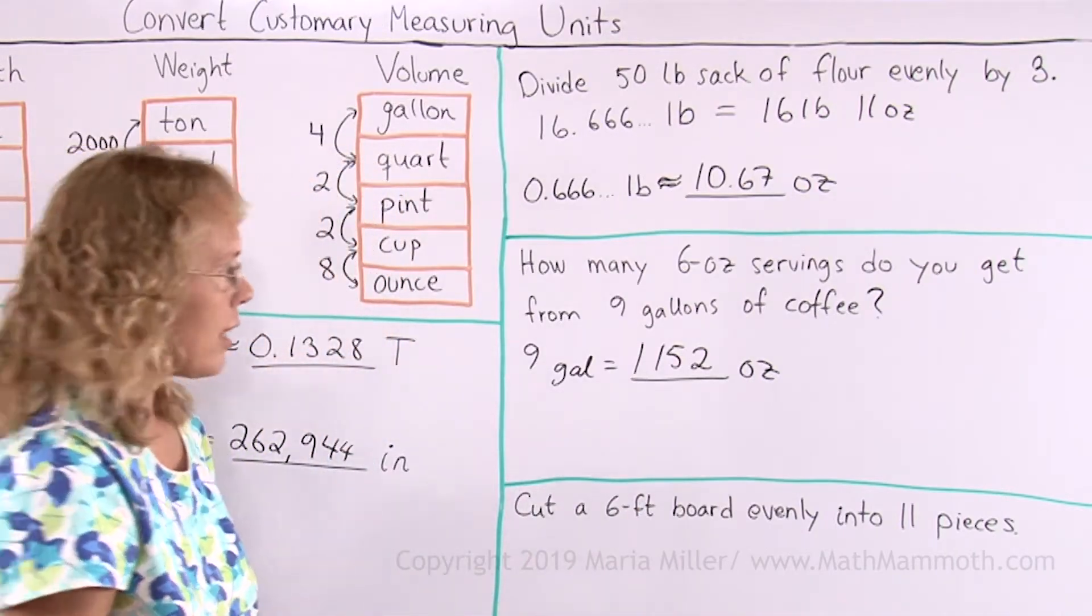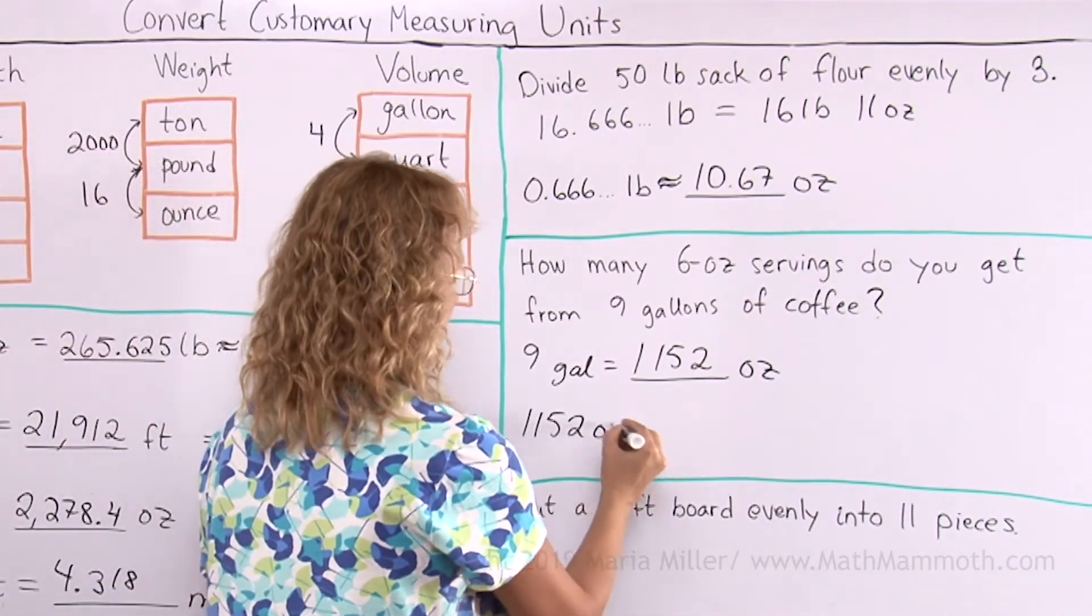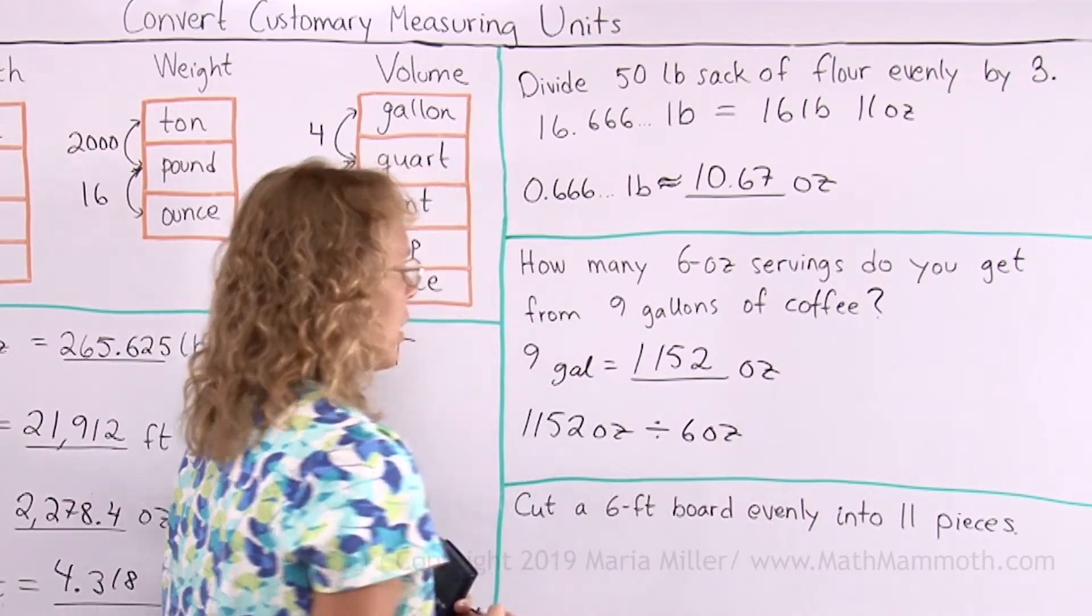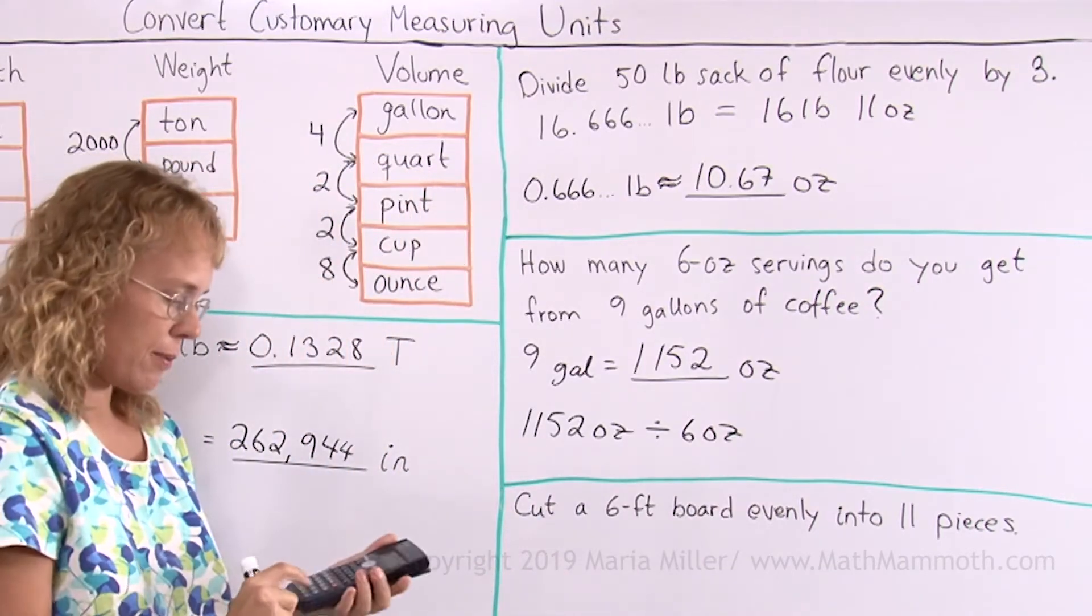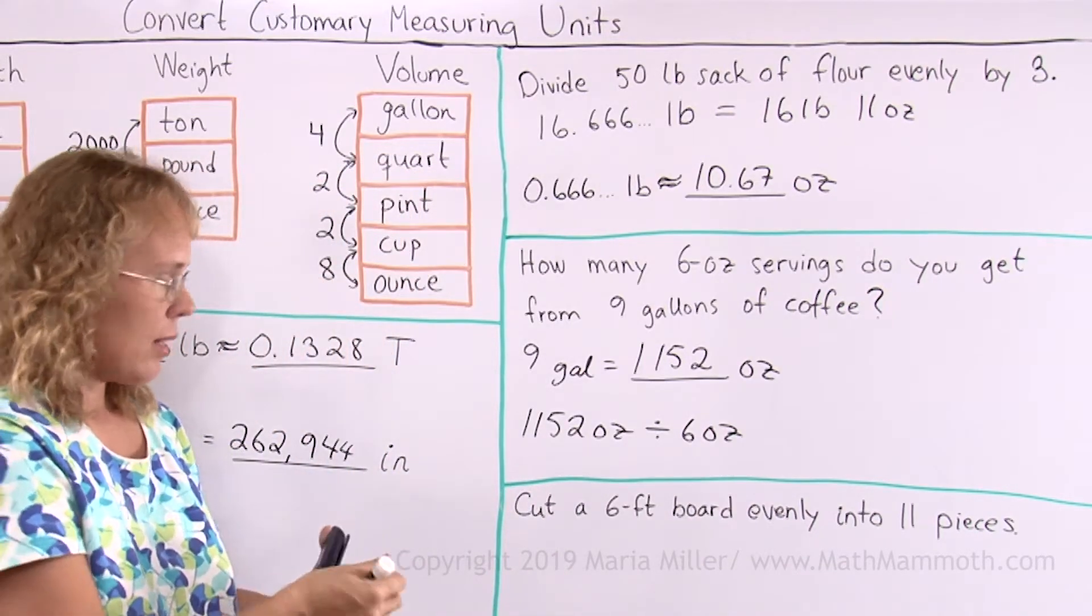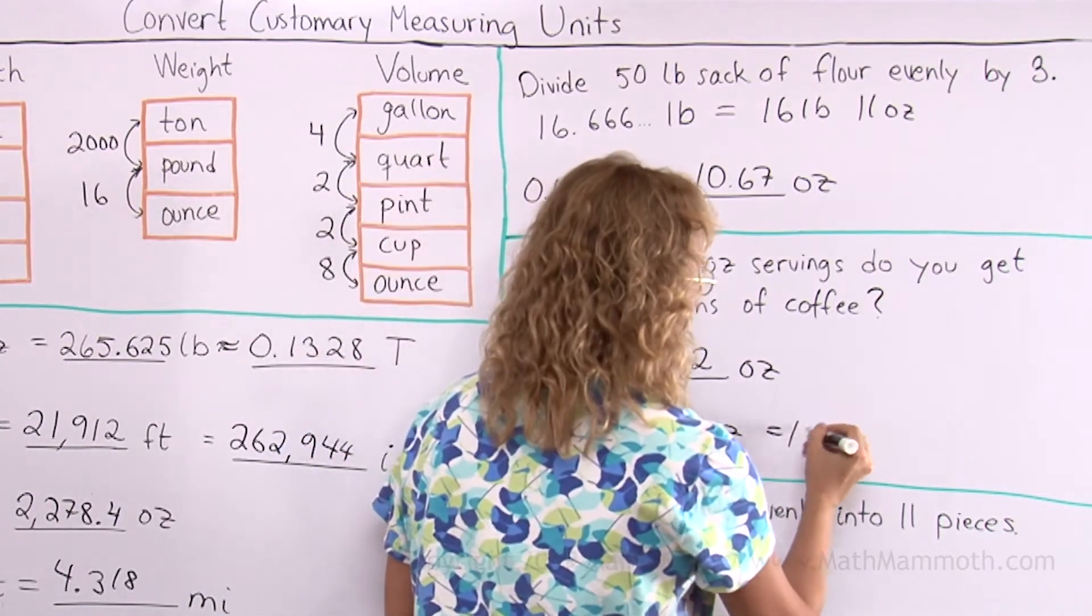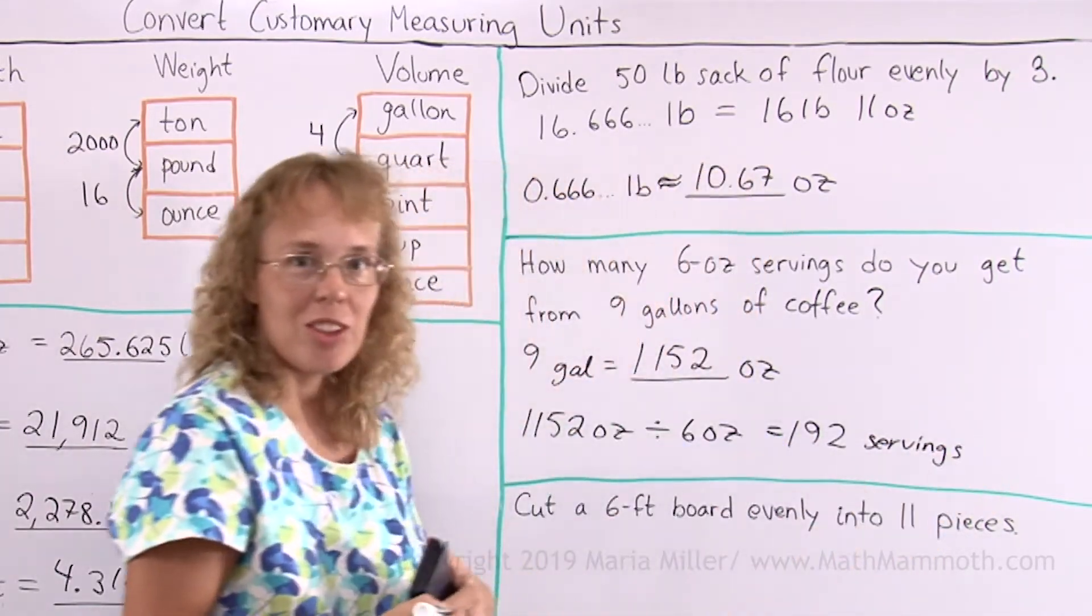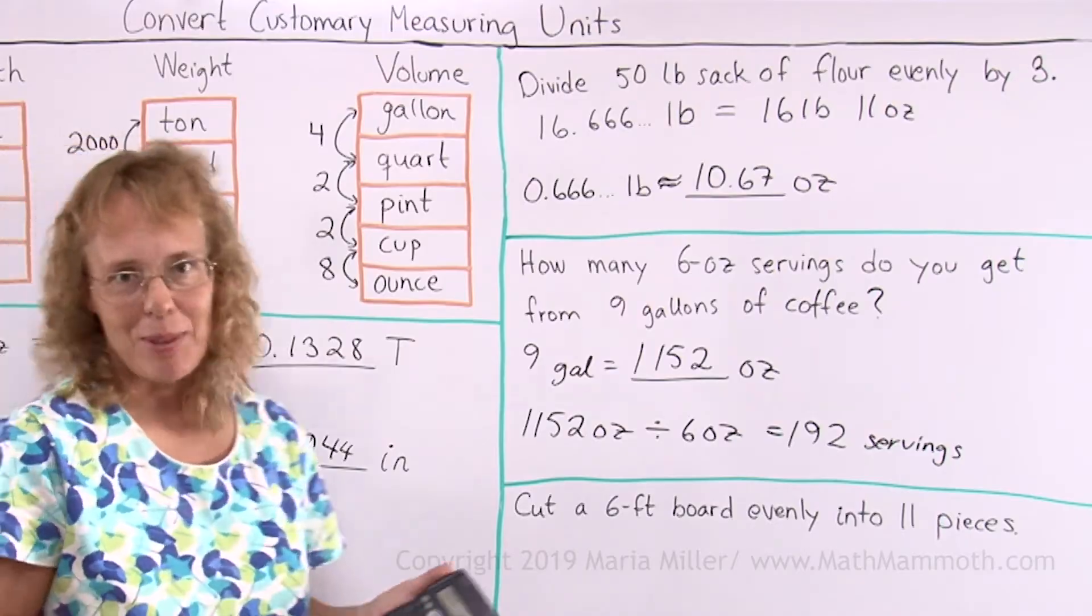And now we divide that by six to get how many servings we actually get. Divide by six. Exactly 192 servings. It wasn't even division at that. Just tap it.